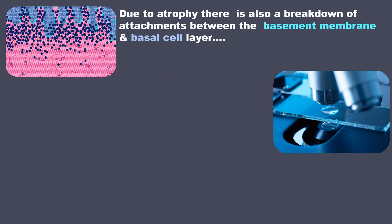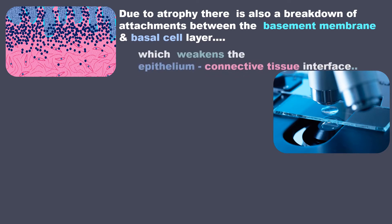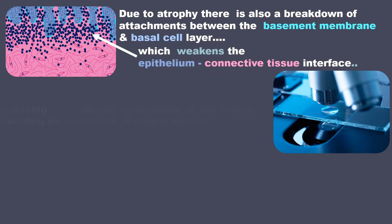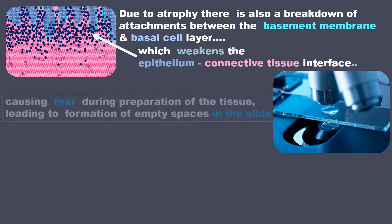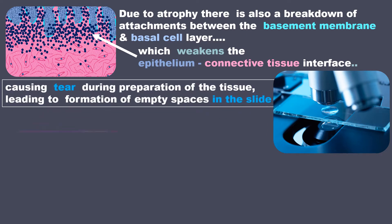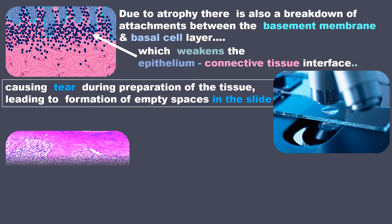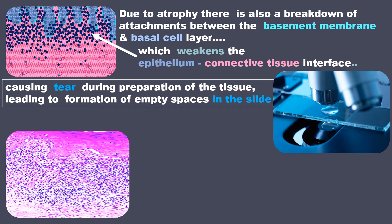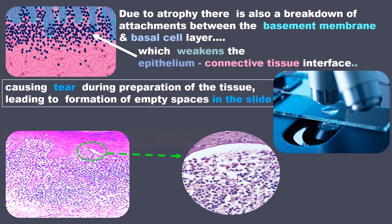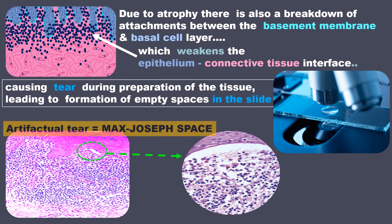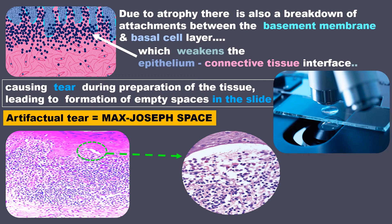Due to atrophy, there is also a breakdown of attachments between the basement membrane and basal cell layer, which weakens the epithelium-connective tissue interface, causing tears during preparation of the tissue and leading to formation of empty spaces in the slide. This is basically an artifactual tear and is called Max-Joseph space.